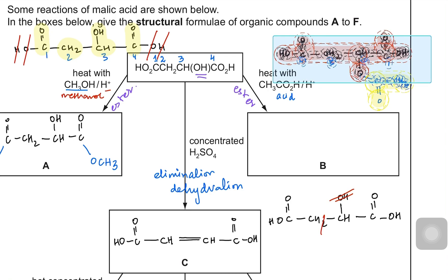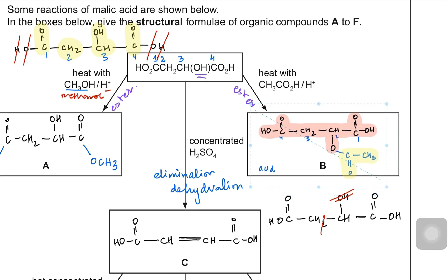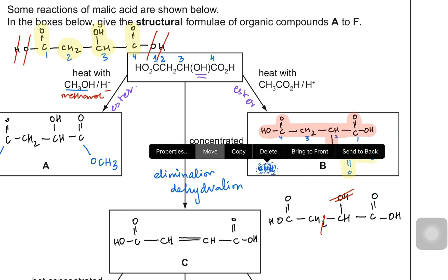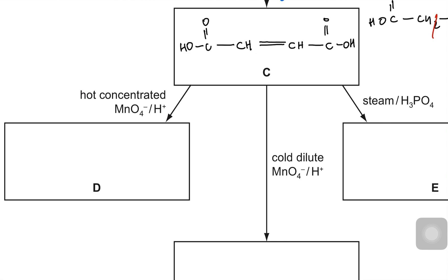So far we are done with three portions. Let me draw the entire structure. Now in option D they want hot concentrated manganate VII — remember that is a strong oxidation reaction. What happens is that the carbon-carbon double bond splits. In your mind you need to focus that this portion and this portion would be separated.